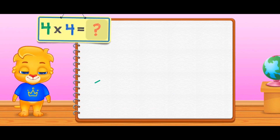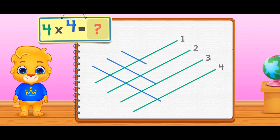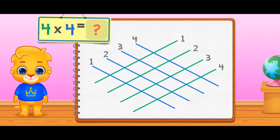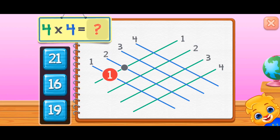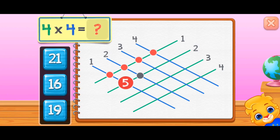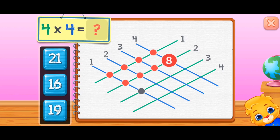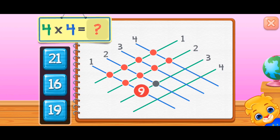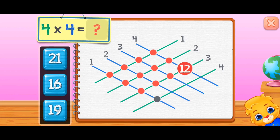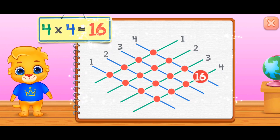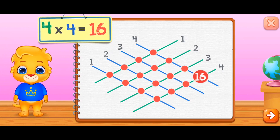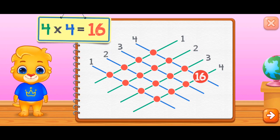Four times four equals — one, two, three, four, five, six, seven, eight, nine, ten, eleven, twelve, thirteen, fourteen, fifteen, sixteen. Four times four equals sixteen.